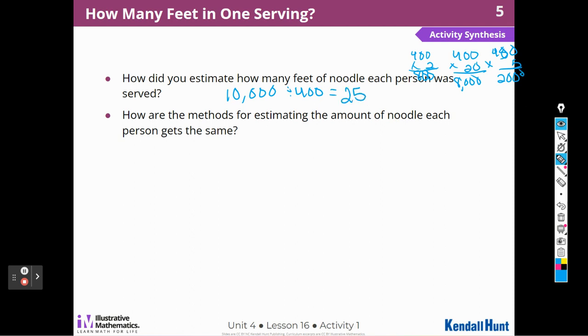How are the methods for estimating the amount of noodle each person gets the same? So you would talk about the different ways that you guys interpreted estimation, and then talk about how it was similar and how it was different with your group.